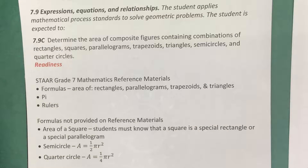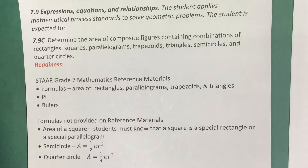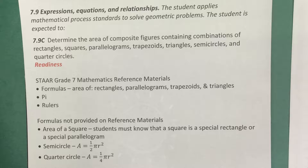Today we're going to take a look at standard 7-9-C, which says the student is expected to determine the area of composite figures containing combinations of rectangles, squares, parallelograms, trapezoids, triangles, semicircles, and quarter circles.